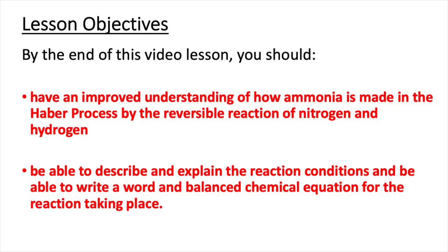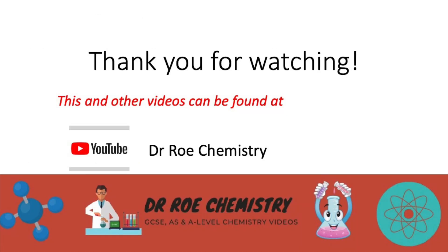That concludes this video lesson. After watching, you should have an improved understanding of how ammonia is made in the Haber process by the reversible reaction of nitrogen and hydrogen, and be able to describe the reaction conditions and write a balanced chemical equation. Thank you for watching — this and other GCSE, AS, and A-level chemistry videos can be found on our YouTube channel, Dr O Chemistry.